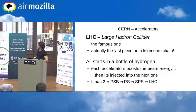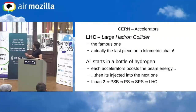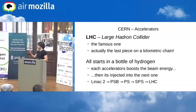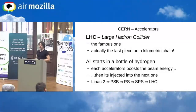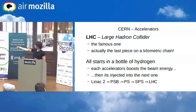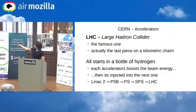CERN has three big categories: accelerators, detectors, and computing. Most people think CERN is only about the LHC, but the LHC is actually the last step. There is a chain: a linear accelerator (now Linac2, becoming Linac4 in 2020), then the PS Booster, then the PS, then the SPS, and finally the LHC.